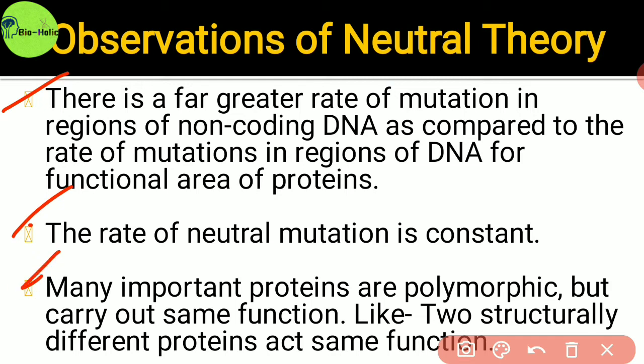Thirdly, the most important observation is that many important proteins are polymorphic but carry out the same function. Suppose there are four different proteins and they can perform the same function — though they have differences in polypeptide chains, they are structurally polymorphic but their polymorphism does not impact their actions. Mutations occurring in various ways are not very effective upon organisms' particular functions, and that is why millions of years are needed to form a new species, since most small mutations have neutral or small impact on organisms.